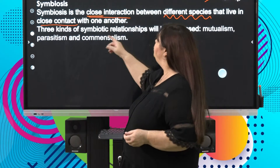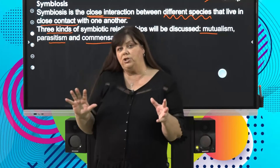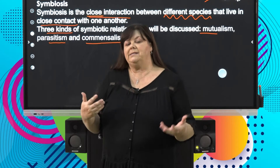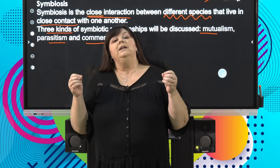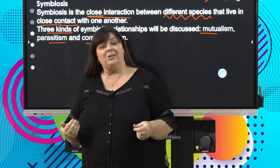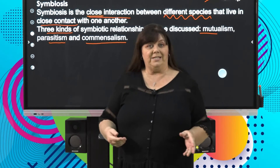There are three kinds of symbiosis you are going to learn about: mutualism, parasitism, and commensalism. We're going to focus on each of these kinds of relationships in turn, looking at some examples. Get your pen and paper ready!